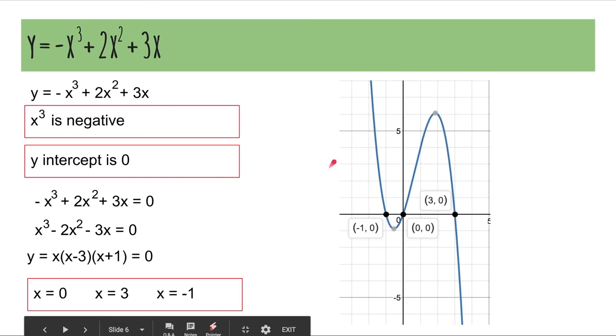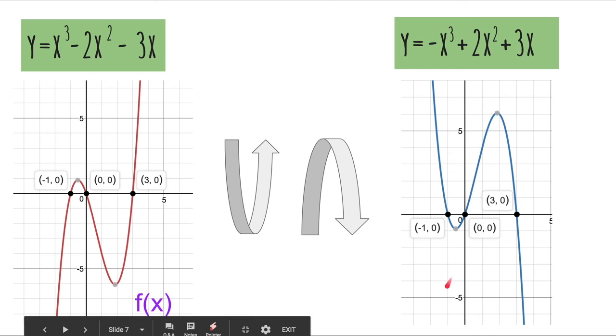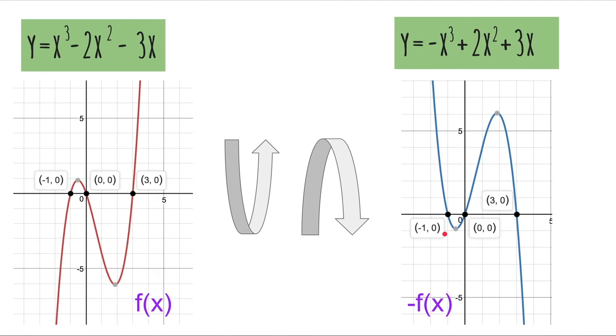The only difference is it starts from the top and ends at the bottom. So, the graphs have been flipped in the x-axis. So, the y values have been flipped because essentially what we did, let's say this is f(x). This will be negative f(x). We just stuck a big negative sign in front of everything. That will flip the y values. So, the graph flips on the x-axis.